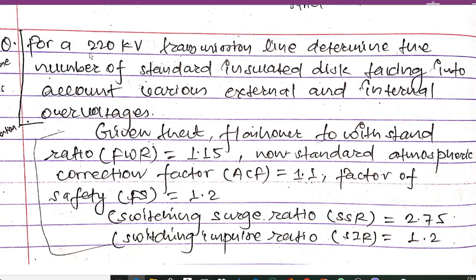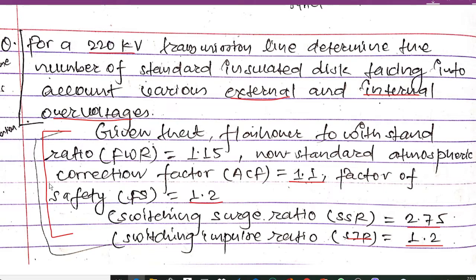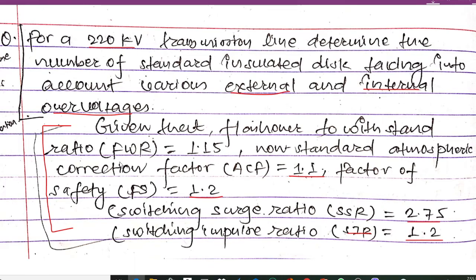We have a 220 kilovolt transmission line and we have to determine the number of standard insulator discs, taking into account various external and internal overvoltages. Given data: flashover withstand ratio FWR = 1.15, atmospheric correction factor ACF = 1.1, factor of safety FS = 1.2, switching surge ratio SSR = 2.75, and switching impulse ratio SIR = 1.2. Sometimes these values are not given in questions, so we must remember them.